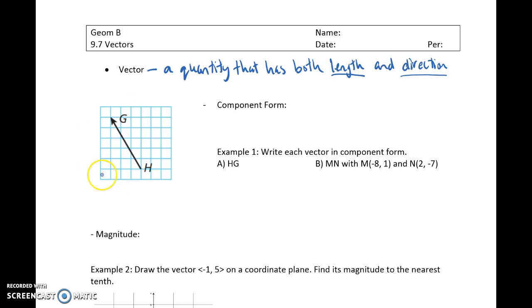If you look at this vector here on the left, this is the vector HG. Remember, you name it with your initial point first, going to your terminal point with that little half arrow. We can also call this lowercase little x, for example, and name that vector x with the little arrow on top.